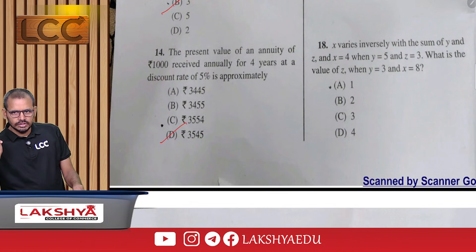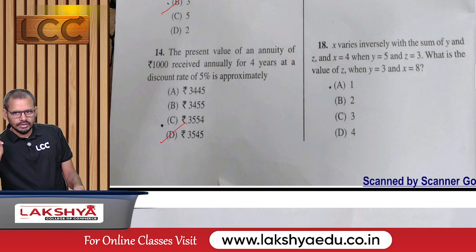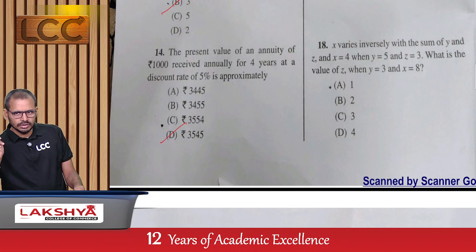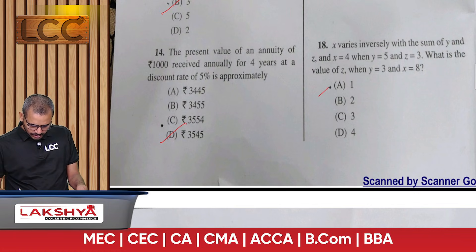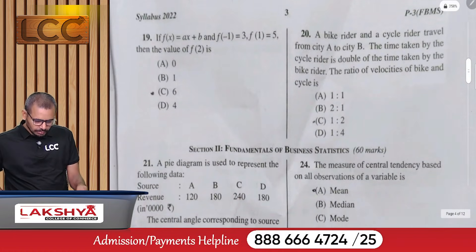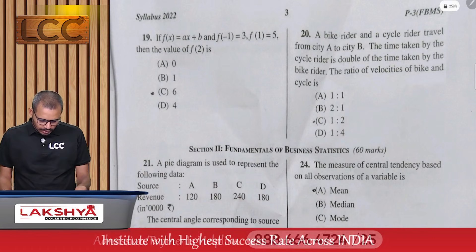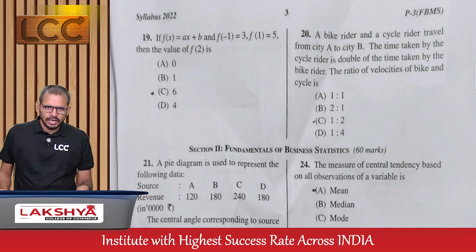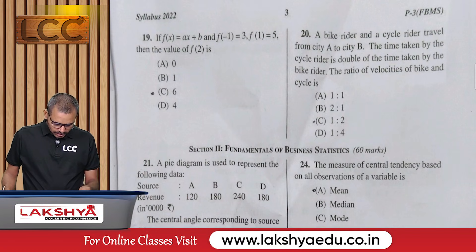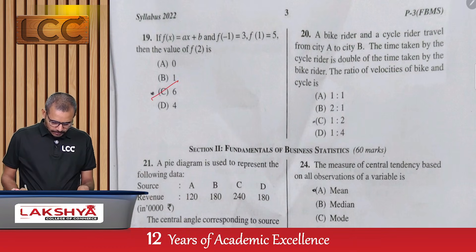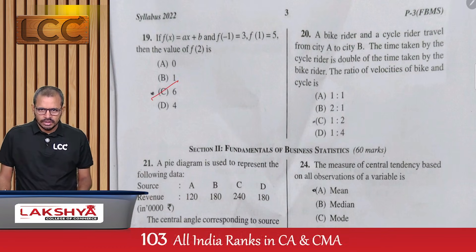Question 18: x varies inversely with the sum of 4y and z; x = 4 when y = 5 and z = 3. Find z when y = 3 and x = 8 — option A. Question 19: f(x) = ax + b, f(-1) = 3 and f(1) = 5, find f(2) — option C.